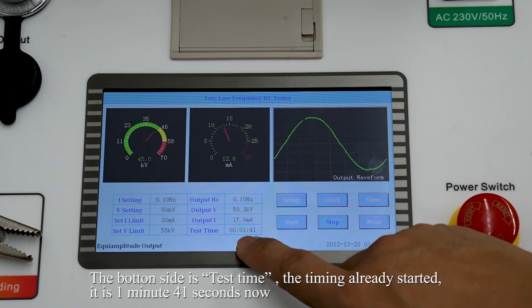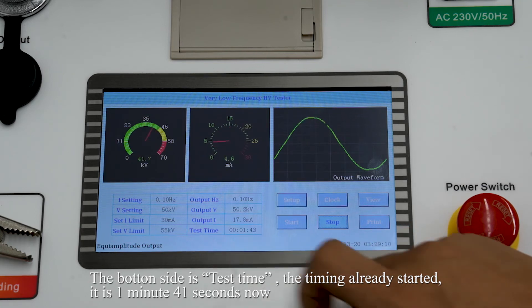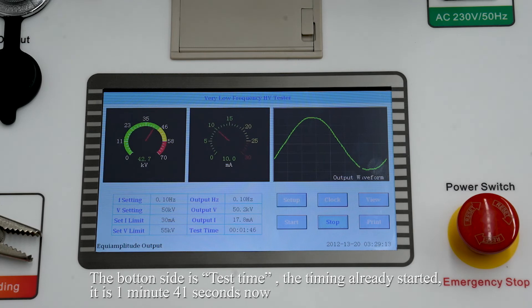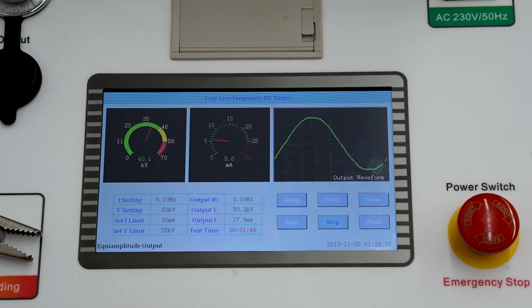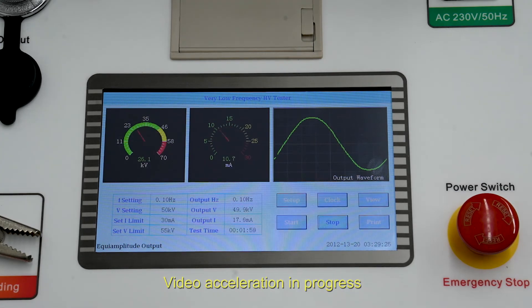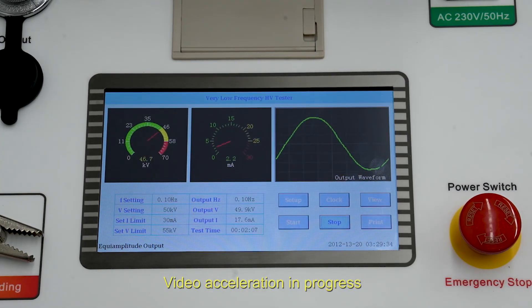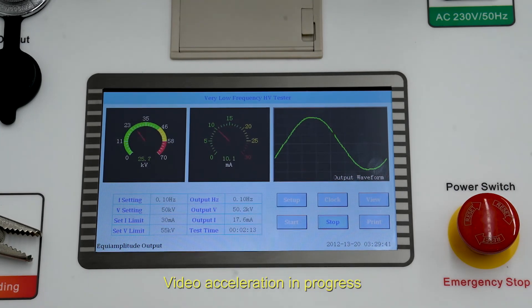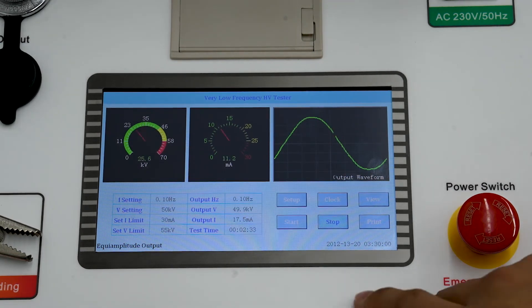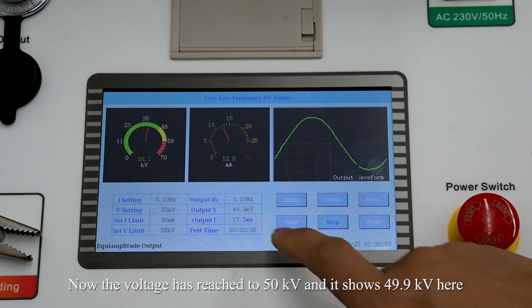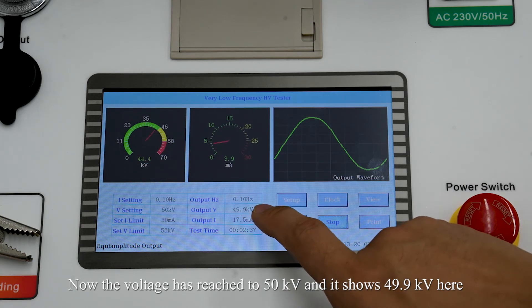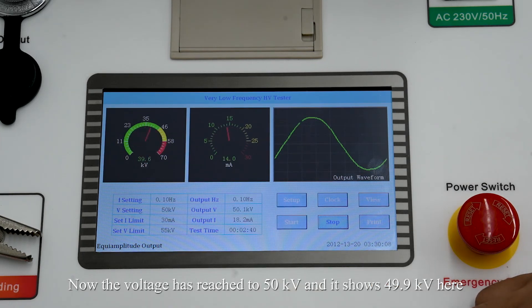The bottom side is the test time. The timing already started. It is 1 minute and 41 seconds now. Now the voltage has reached 50 kV. And it shows the line voltage kV here.